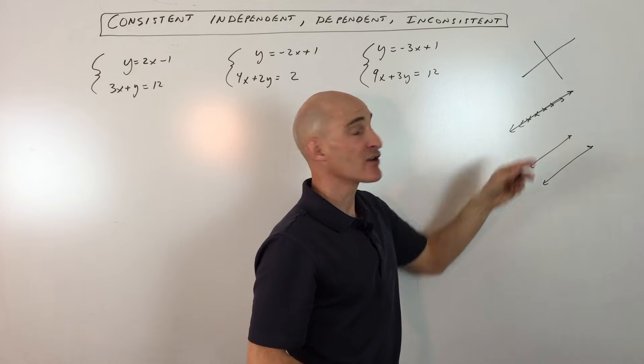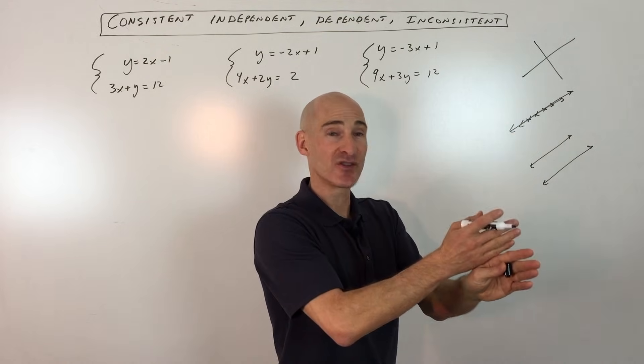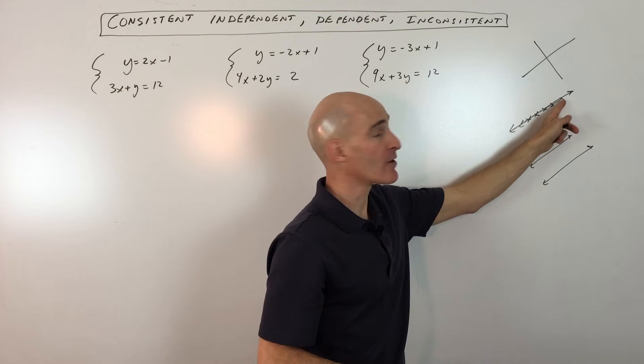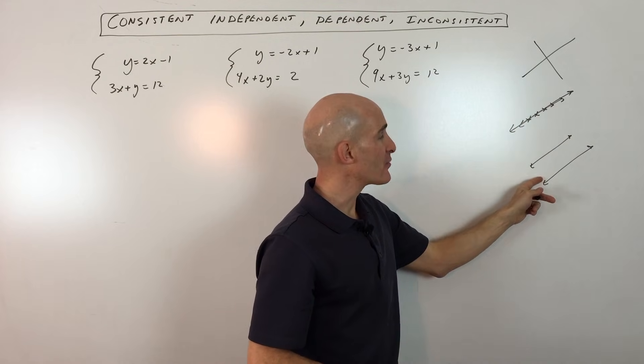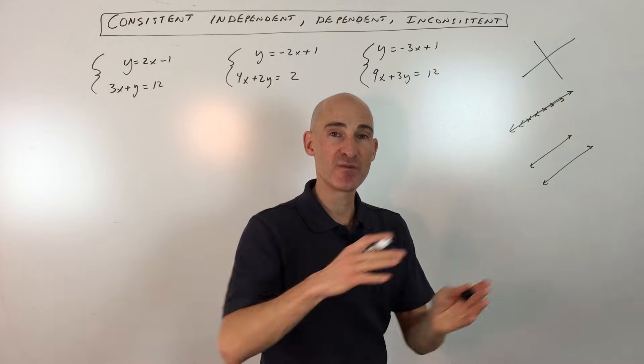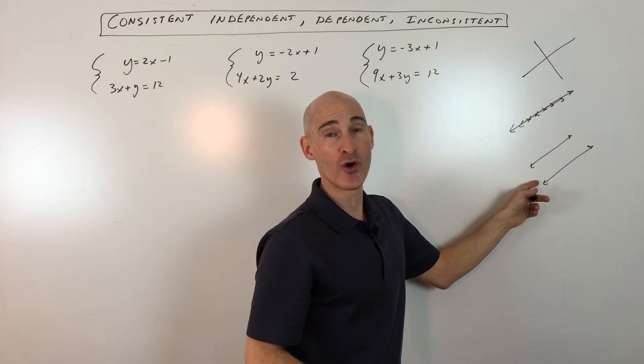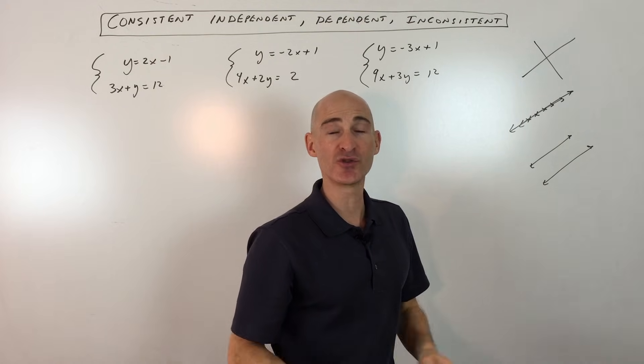The second thing that could happen is that they could actually be the same line, so they could be crossing at an infinite number of points. And then the third case is that the two lines could actually be parallel, which means that they'll never cross, so there's going to be no common point of intersection or no solution.